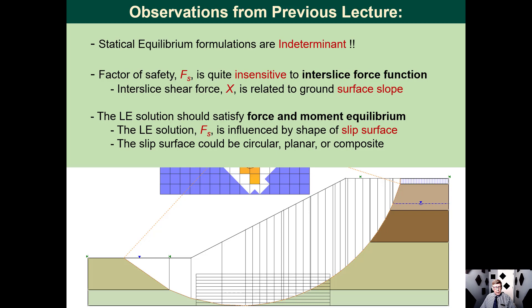Another observation from the first lecture was that the factor of safety was quite insensitive to the inter-slice force function. You can assume quite a wide range of possibilities and still the factor of safety calculations did not vary significantly. We also found out that the inter-slice force function shear was related to the slope of the ground surface — the resultant inter-slice force functions were largely controlled by the geometry at the ground surface.